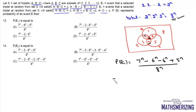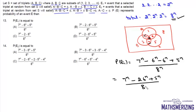So the probability of E1 will be (7^N − 2×6^N + 5^N) / 8^N, and that's option B.